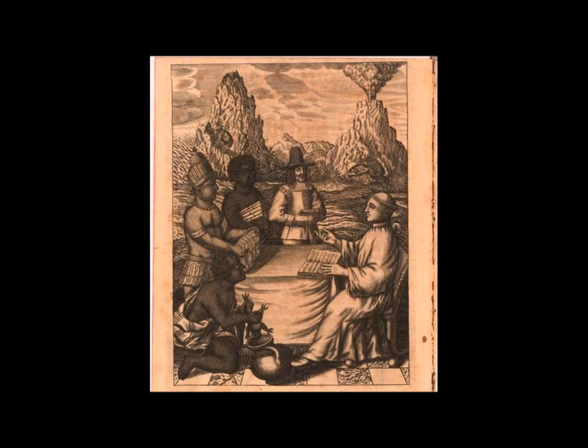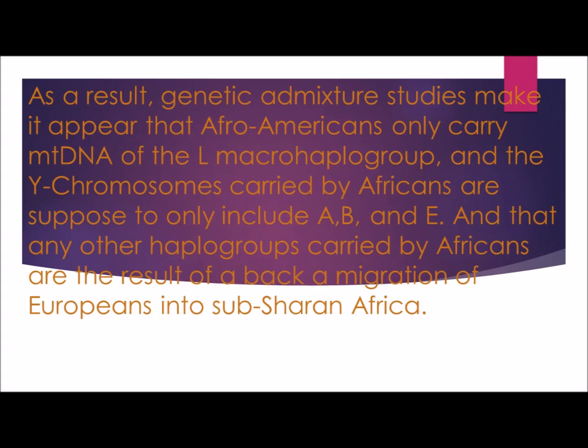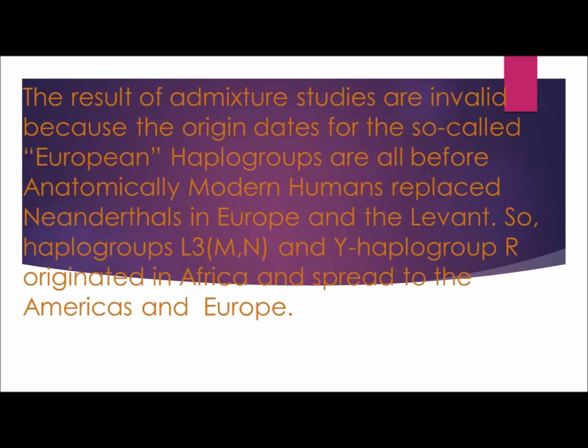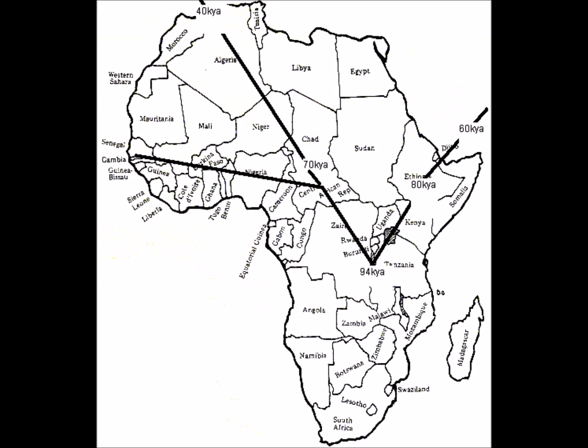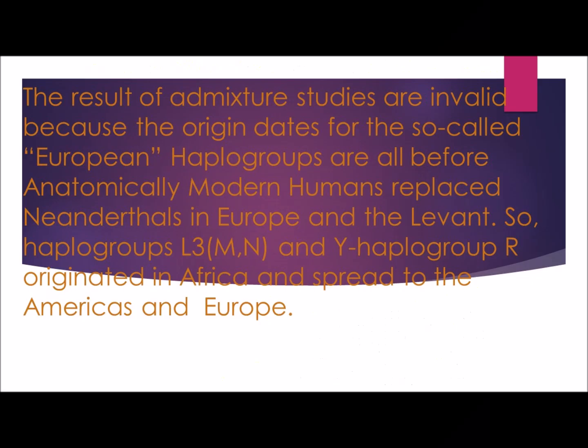As a result, genetic admixture studies make it appear that Afro-Americans only carry mtDNA of the L macro-haplogroup, and that the Y chromosomes carried by Africans are the result of a back migration of Europeans into sub-Saharan Africa. The results of admixture studies are invalid because the origin dates for the so-called European haplogroups are all before anatomically modern humans replaced Neanderthals in Europe and the Levant.